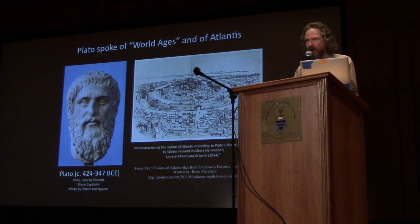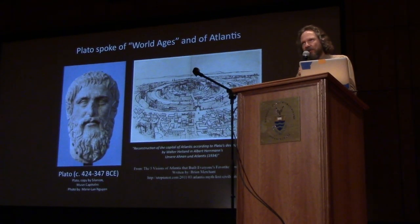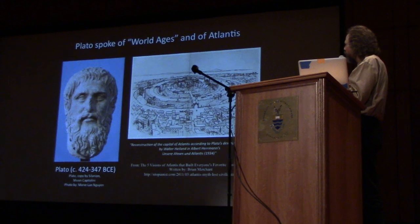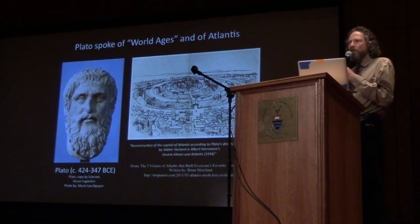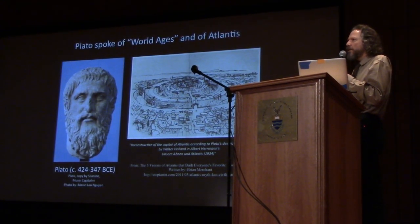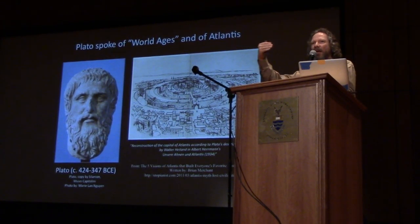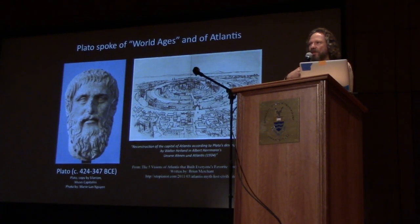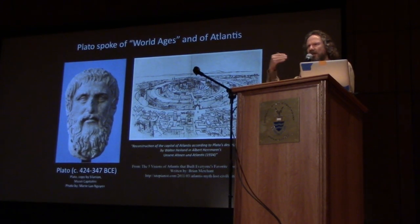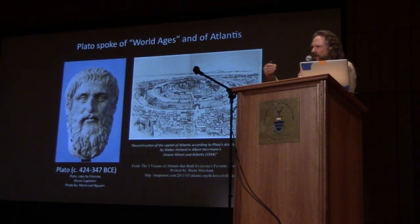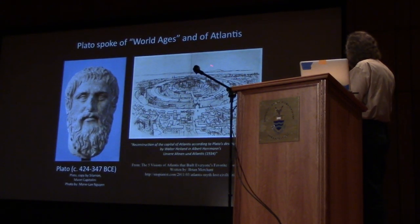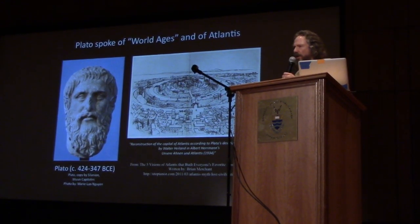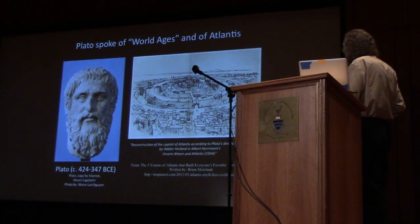Just as a side note — and we'll come back to this later, especially in my talk tomorrow — people like Plato, the great philosopher, talked about world ages. Many cultures talk about world ages and advanced civilizations much earlier than 3500 BC. Plato talked about Atlantis — the city of Atlantis, within the larger country of Atlantis. If you take Plato's chronology and put it into our calendar years, you come up with about 9600 BC for Atlantis and the destruction of Atlantis. Keep that date in mind.